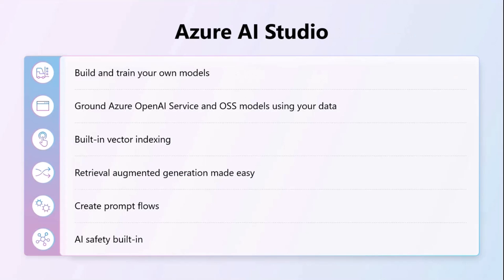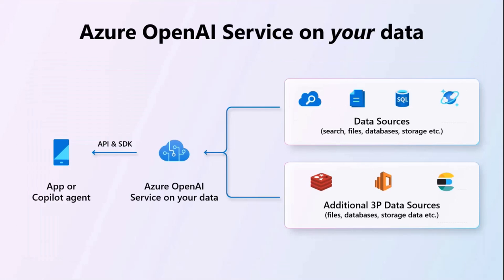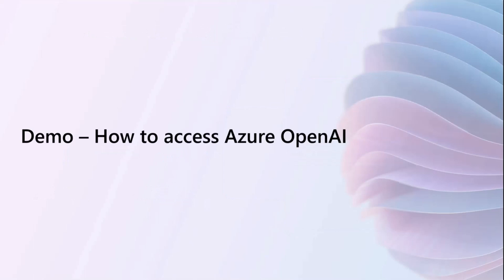The Azure AI Studio allows you to build and train your own models, do vector indexing, try out the retrieval augmented generation pattern, work with prompt flow, and even test out AI safety. There is also a new feature called 'Add Your Own Data' where you can test out the RAG pattern — upload your own documents and then query on top of them.